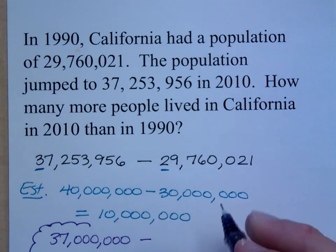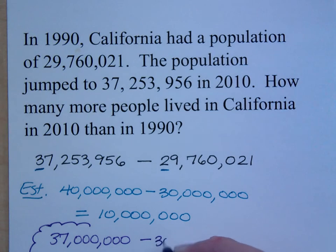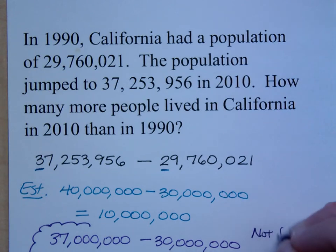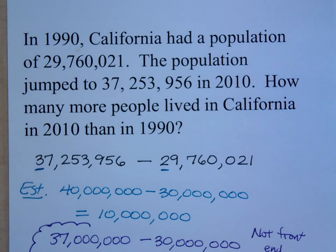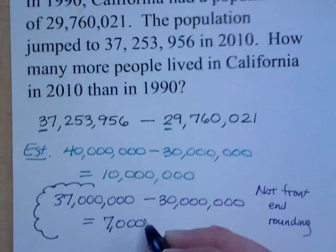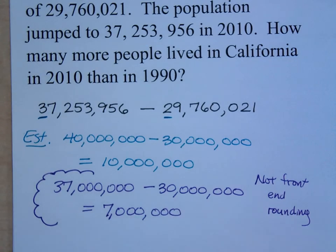If I round 29,760,021 to the nearest million as well, it's still thirty million. Please understand, this is not front-end rounding that I'm doing right here. So my estimation from thirty-seven million minus thirty million is about seven million. Front-end rounding would say ten million, but if we round a little bit differently — where we don't lose as much information — it should be about seven million. So let's see what the exact answer is.